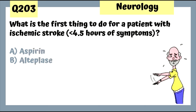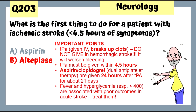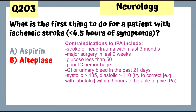Question 203: What is the first thing to do for a patient with ischemic stroke? If they come in within 4.5 hours of symptoms, we give TPA such as alteplase. TPA greatly reduces morbidity and mortality in ischemic stroke. TPA is given IV and breaks the clots, but do not give in hemorrhagic stroke. TPA must be given within 4.5 hours, and after 24 hours we give dual antiplatelet therapy with aspirin and clopidogrel for 21 days.